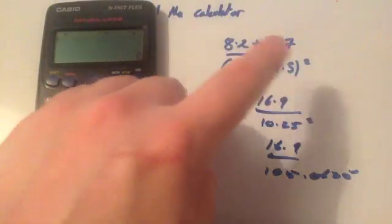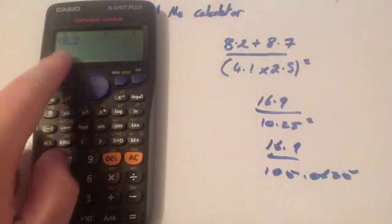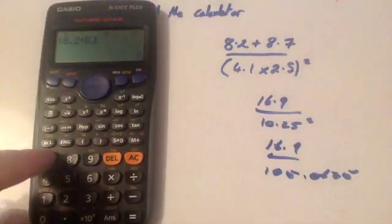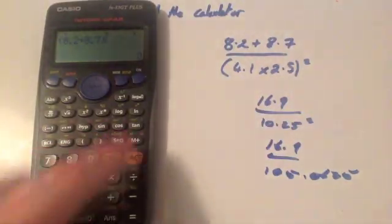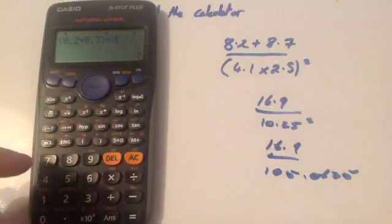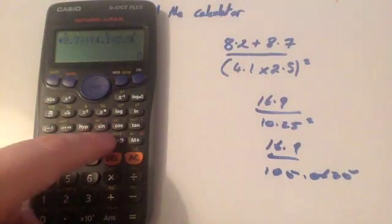So you want to work out the top line first of all. So you want to put that in brackets. So 8.2 with brackets, the brackets are there, open it up, plus 8.7, close brackets. Now you're going to divide that, so divide it by, and again, it's got brackets, so you're going to open up brackets and do 4.1 times 2.5, close brackets.